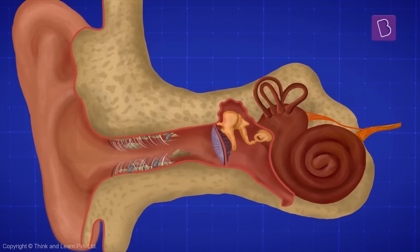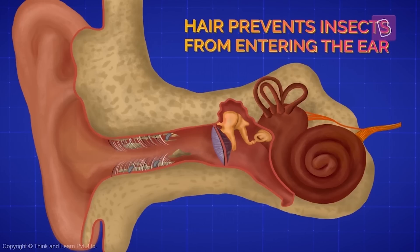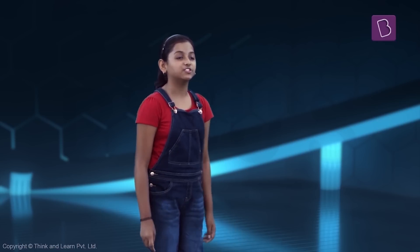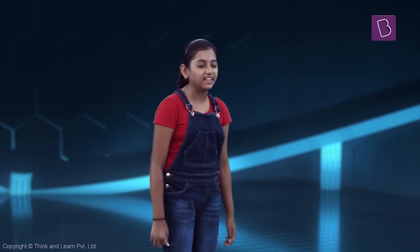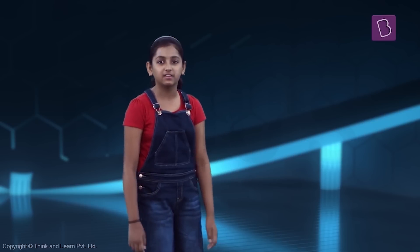And by the way, the small little hairs that you see out there — they stop insects and other external objects from entering the ear. Whoa! There is so much more to this disgusting thing. I never thought about that.